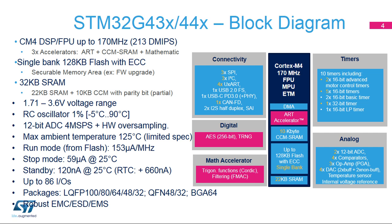The STM32G43X also includes a crystal-less USB 2.0 FS interface, USB-C power delivery functionality, up to 86 GPIOs, and multiple low-power modes to maximize battery life. The timer set is oriented for motor control applications. To speed up CPU performance in time-critical routines, the CCM memory supports code execution with zero-wait states.